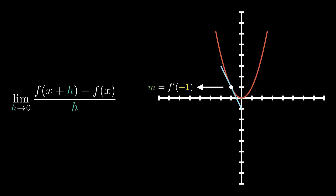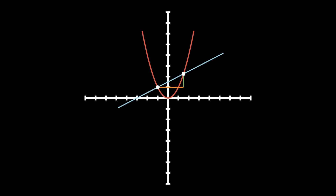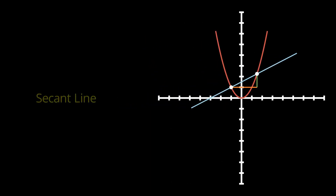So what we're going to be doing is starting from the beginning and working our way up to show how we land at this definition. Now let's say we had our function x squared and let's say we had a line that crosses through this function. There's a name that we call this line — we refer to it as a secant line. A secant line is basically a line that crosses through two or more points, and as you see, this line is crossing through two points on our parabola.